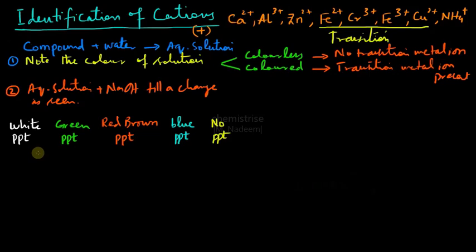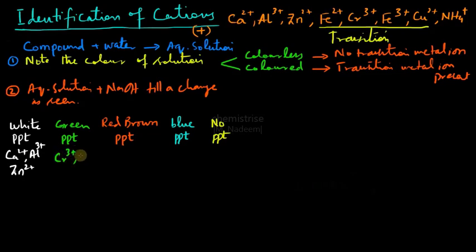Let's see the different colors of precipitates. If we get a white precipitate, it could be due to three cations: Ca²⁺, Al³⁺, or Zn²⁺. A green precipitate is because of Cr³⁺ or Fe²⁺. A red-brown precipitate indicates the presence of Fe³⁺. A blue precipitate is due to Cu²⁺. If there is no precipitate, we will consider that case separately. This part of the test is called Test 2A.